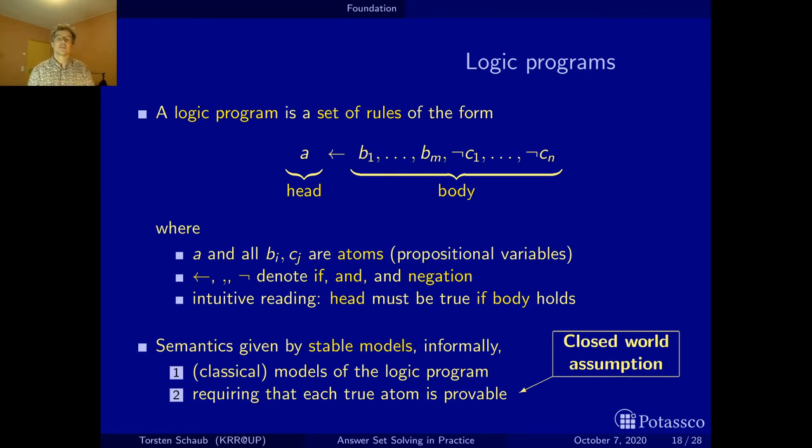Another thing that the closed world assumption brings about is that conclusions become tentative. So if there is no evidence for a proposition, it is set to false. But if you later on learn that this proposition is true, and you add it to your program, it now changes its truth value from false to true. Just as many things in life that draw upon assumptions. Examples include flying birds, you learn about a bird, the bird flies. A minute later the guy says, oh it's a penguin. Oh no, it doesn't fly anymore. It's an exception, because you assumed it was a normal bird.